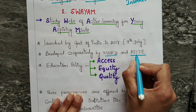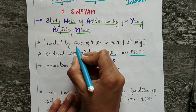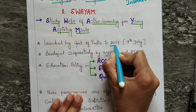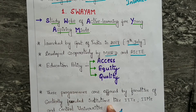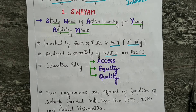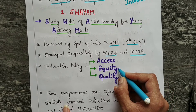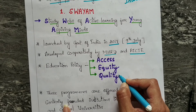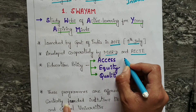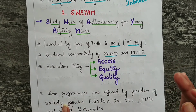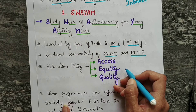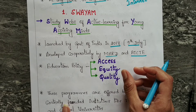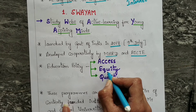SWAYAM was launched in 2017, specifically on 9th July. The main principle of SWAYAM is access, equity, and quality. Access means anybody can access the courses, and equity is similar to the word equal but not exactly equal.